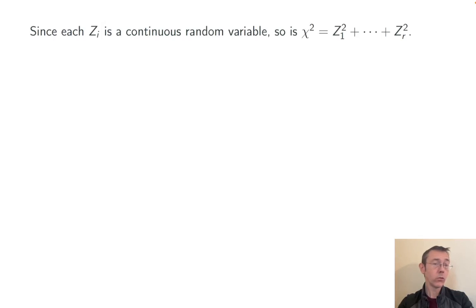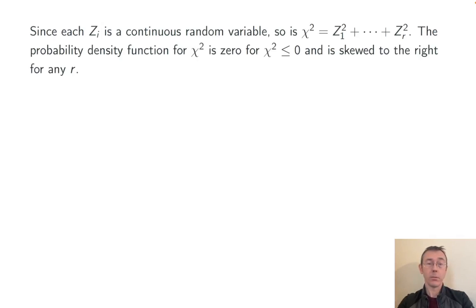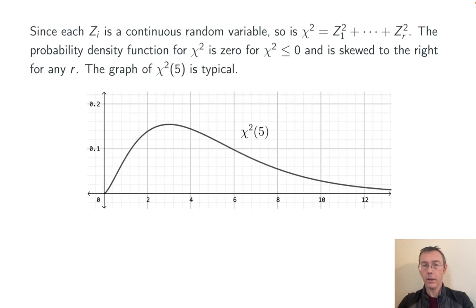Since each of the z-scores is a continuous random variable, so is the sum of the squares of them. We can describe it with a probability density function. In the case of chi-squared, the PDF is only going to be positive for chi-squared values that are at least zero. The distribution is going to be skewed to the right because very extreme values for each of the standard normal distributions for the z-scores are going to be decreasingly likely. The graph of chi-squared of five is typical. It's got this strong rightward skew. You can see that its support, the set of possible outcomes, is strictly positive.